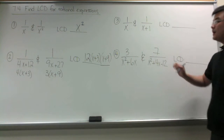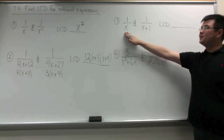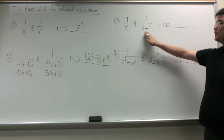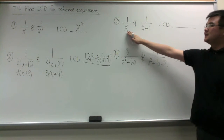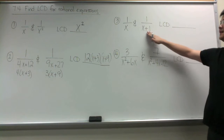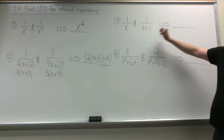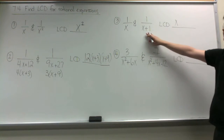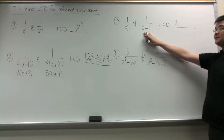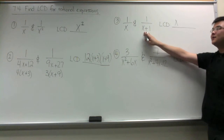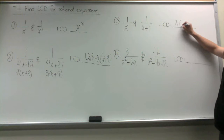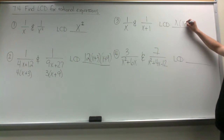In our next example we have a monomial denominator and a binomial denominator. Since the monomial is not in the other denominator, it automatically goes in the LCD. And the same thing for the binomial — since it is not in the other denominator, it automatically goes in the LCD as well.